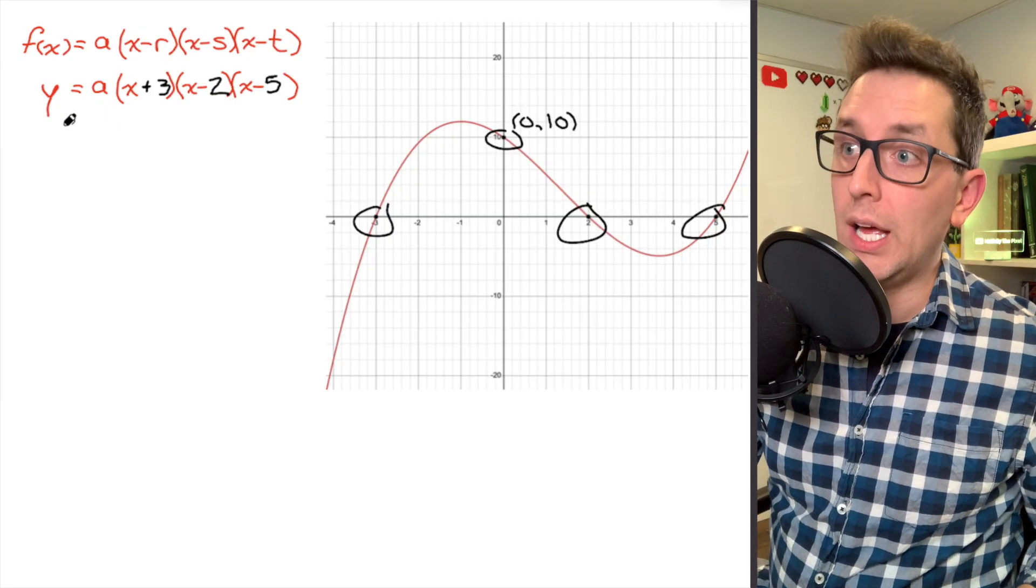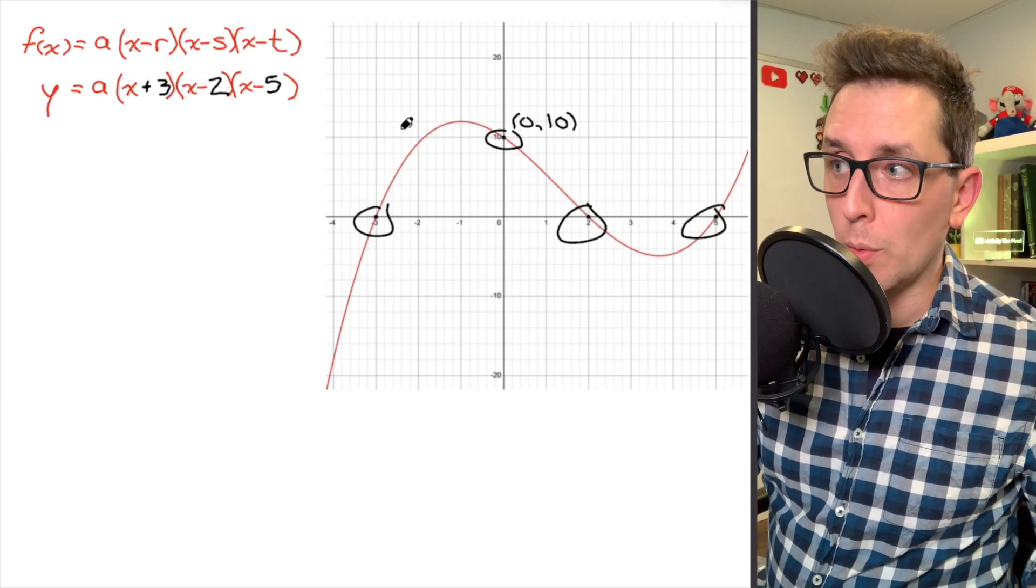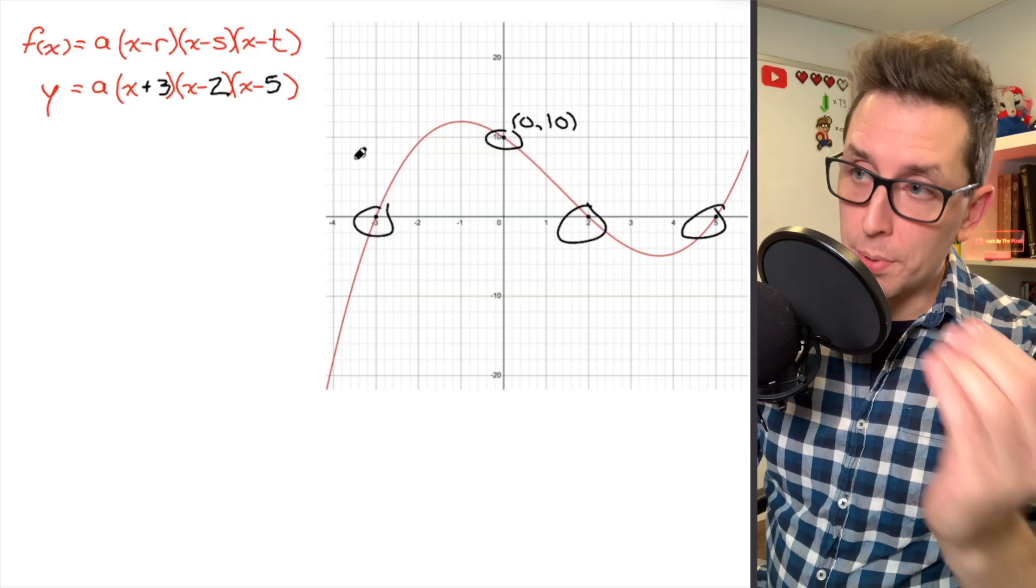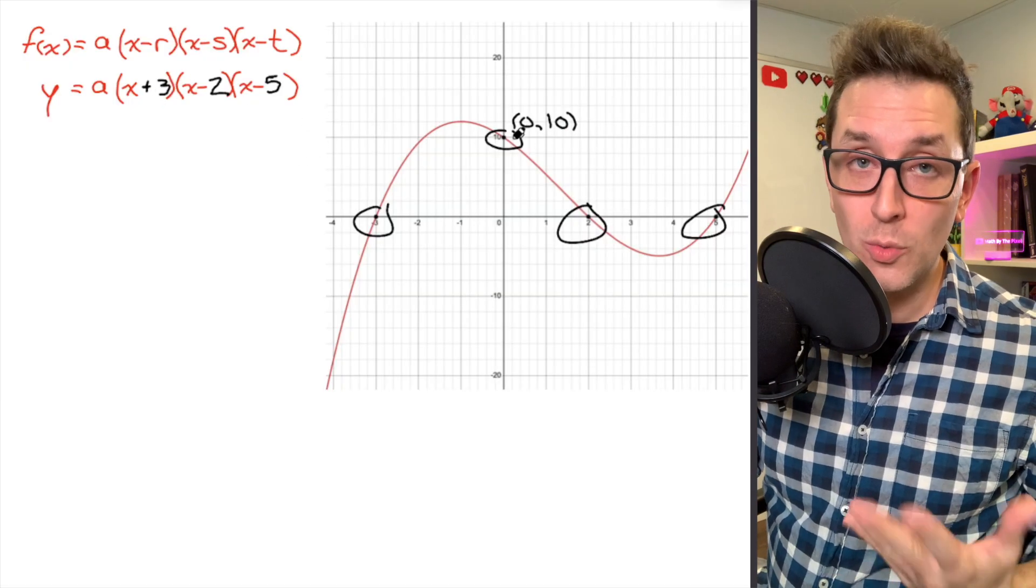Well, I'm going to go over to my equation here, and wherever I see a y, I'm going to replace it with a 10, because that's the value of y at that point. And wherever you see an x, I'm going to replace it with the corresponding x value, which is 0.